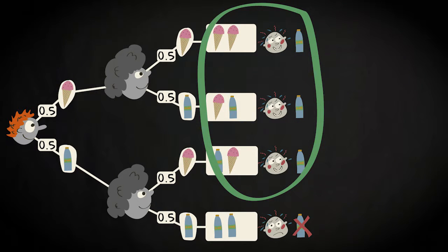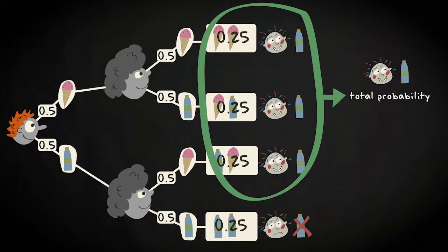One way to calculate the total probability in this case would be to calculate the probability of II, IS and SI and then sum these. This results in a total probability of 0.75.